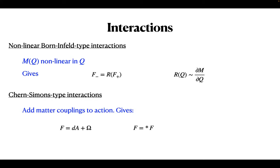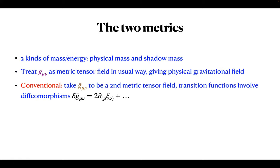There are two kinds of metrics and hence two different kinds of conserved charges. There's a physical mass related to the physical metric, and the fields in the shadow sector don't have any mass of that kind. There's a shadow mass related to ḡ, and only the shadow fields have that kind. All fields in the physical sector don't couple to ḡ, giving rise to the physical gravitational field. The conventional approach is to take ḡ to be a second metric tensor field, where the components of ḡ in two different coordinate patches are related by the usual diffeomorphism—the same transition functions which occur for the physical metric G.